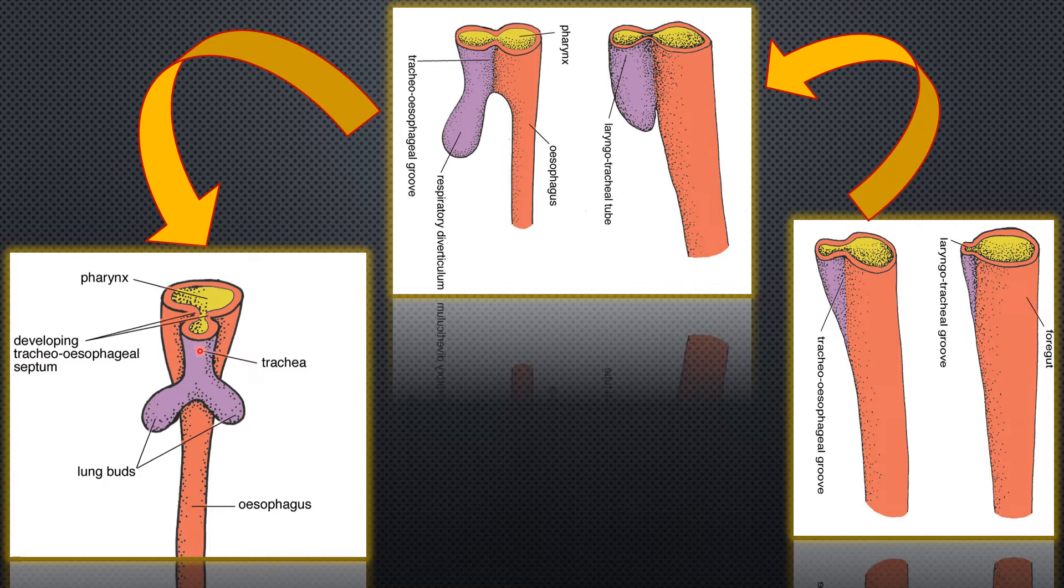Now, the trachea is the one which is going to bifurcate into two lung buds. Likewise, the trachea lies between the larynx and the lung buds. Towards the cephalic, larynx is there, and to the caudal, lung buds are there. So, this trachea lies between the larynx and the lung buds.